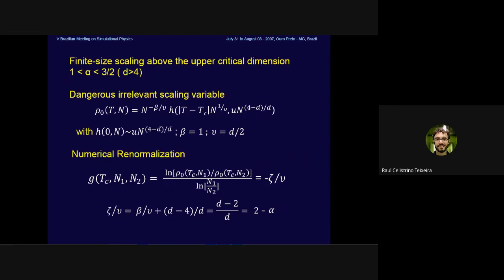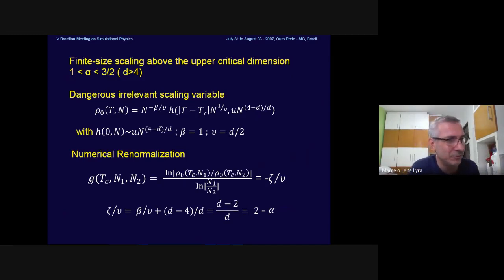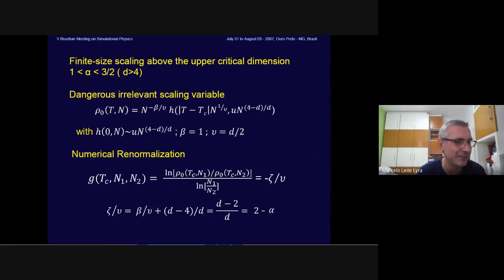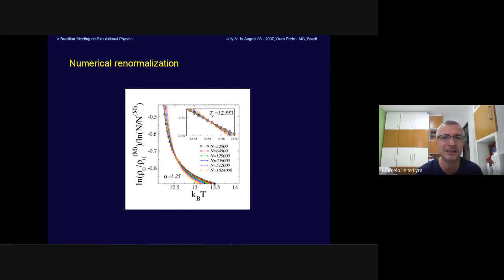[Q&A: Does this dangerous irrelevant variable also appear for simple homogeneous models above their upper critical dimension?] Yes — if your model has a dimension above the upper critical dimension (d=4 for BEC), you always have to include this term in finite-size scaling. For example, if you do an Ising model in five dimensions and perform finite-size scaling, you must consider this correction.